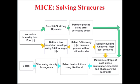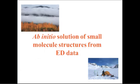So you normalize the data, you select some strong U values, you permute the phases with error-correcting codes, you maximize the entropy of each one, you select the best solutions with likelihood, and then you get to look at the maps.